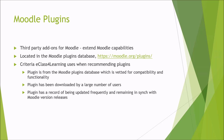The criteria that eClass for Learning uses when recommending plugins: first, the plugin must be from the Moodle plugins database, which is vetted for compatibility and functionality. When you search through that database, it will tell you which versions of Moodle the plugin has been certified for. We always stick to the Moodle plugins database. Second, the plugin should have been downloaded by a large number of users, because if it's used by many Moodle installations, there is pressure on the developer to keep it up to date.